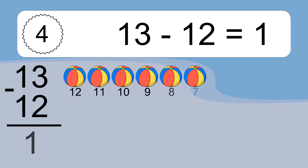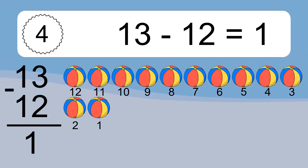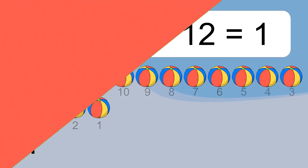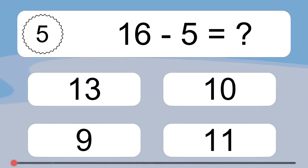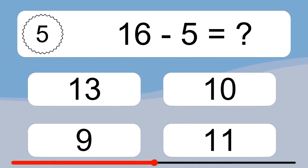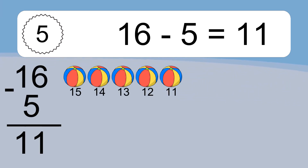13 minus 12 equals what? 13 minus 12 equals 1. Let's count it: 12, 11, 10, 9, 8, 7, 6, 5, 4, 3, 2, 1. 16 minus 5 equals what? 16 minus 5 equals 11. Let's count it: 15, 14, 13, 12, 11.